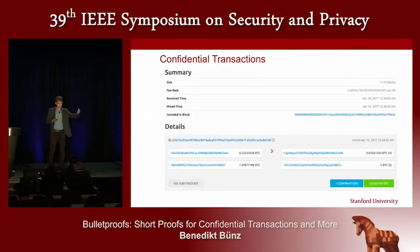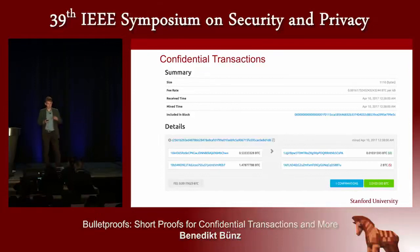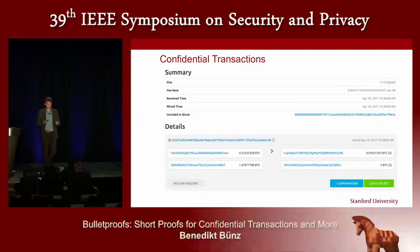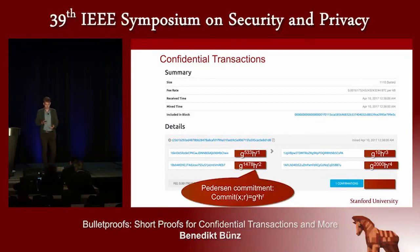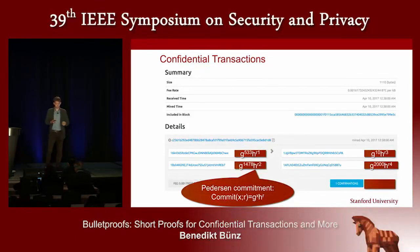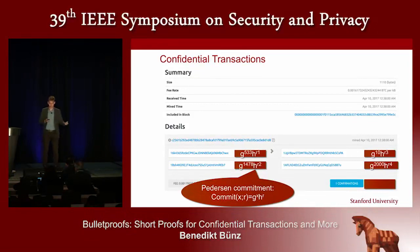The idea of preventing transaction amounts from being public is called a confidential transaction. To hide these transaction amounts, we use something called a cryptographic commitment — specifically a Pedersen commitment. It has two properties: it is hiding, meaning it doesn't reveal what the amounts are, and it is binding, so once you commit to a value, you cannot open it to another value later.